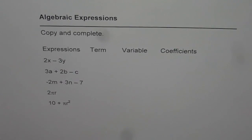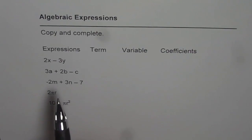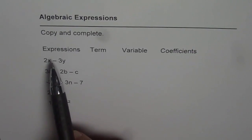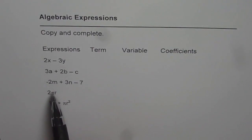Let us understand some technical terms for algebraic expressions. The question is copy and complete the given table. Here we have columns with the name expression, terms, variables, and coefficients. All these are algebraic expressions given to you.